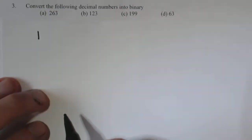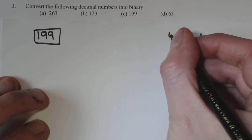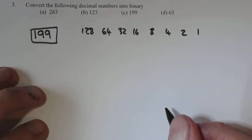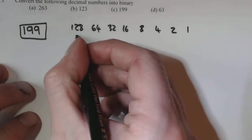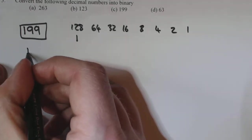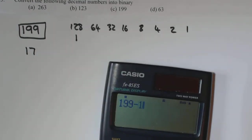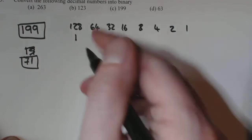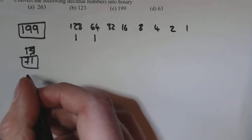Now, your next one is 199. And again, you'll get used to these and it'll be second nature. 16, 32, 64, 128. So 128 goes into 199 once. And what you've got left is 71. 64 goes into 71 once. And what you've got left, 71 minus 64, that's 7. 32 doesn't go into 7. 16 doesn't go. 8 doesn't go.